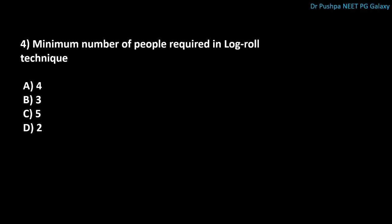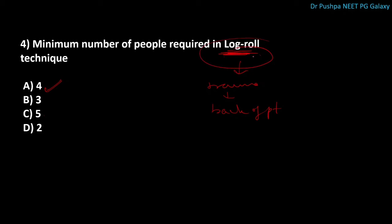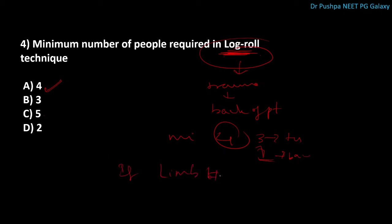The next question is: minimum number of people required for the log roll technique. This technique is used to check the back of the patient. Minimum we need four people — three to turn the patient and one to examine the back. If the patient has a limb fracture, then we need a minimum of five people.